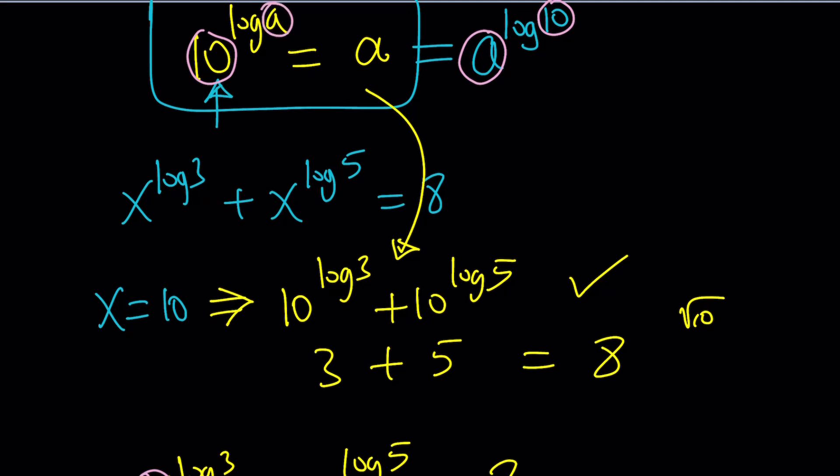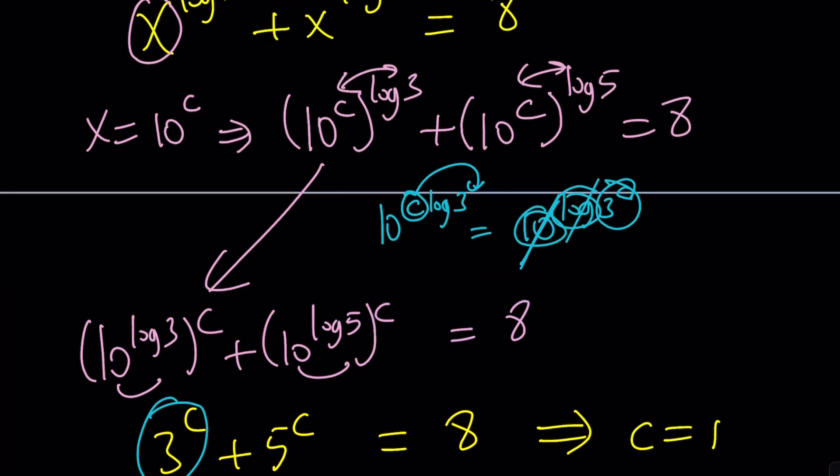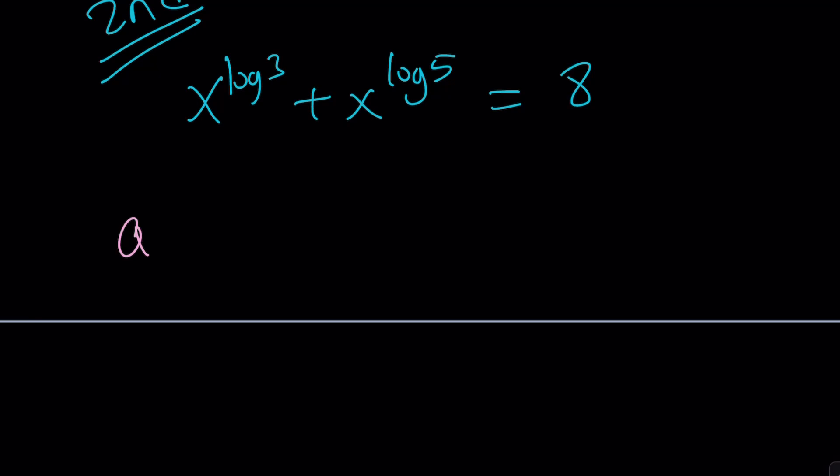So, what does that mean? It just means that those can be switched around. In other words, a to the power log b is b to the power log a. These numbers can always be switched around. Proof: log both sides, and you'll see it. Of course, that's not a proof, but you get the idea.